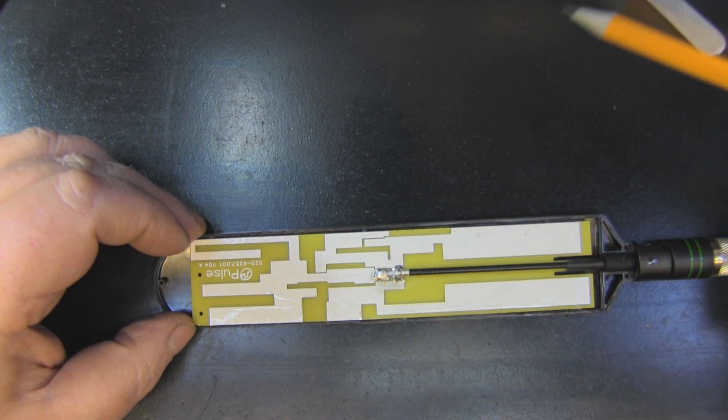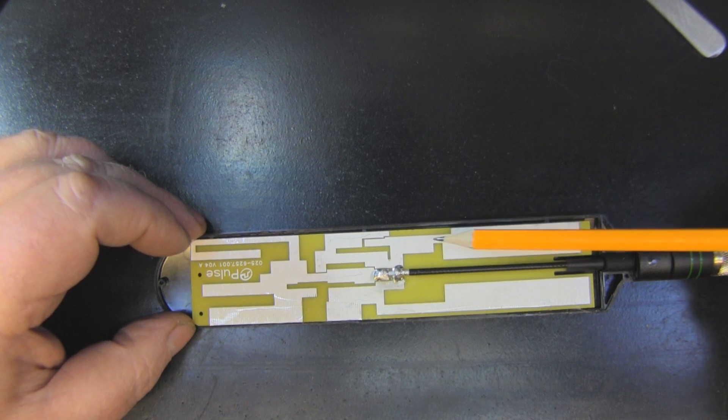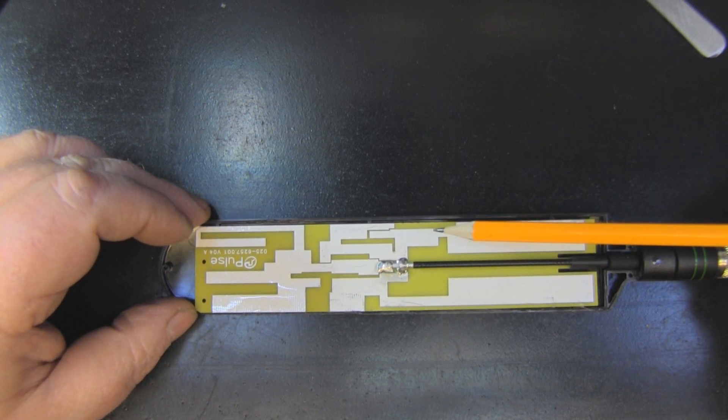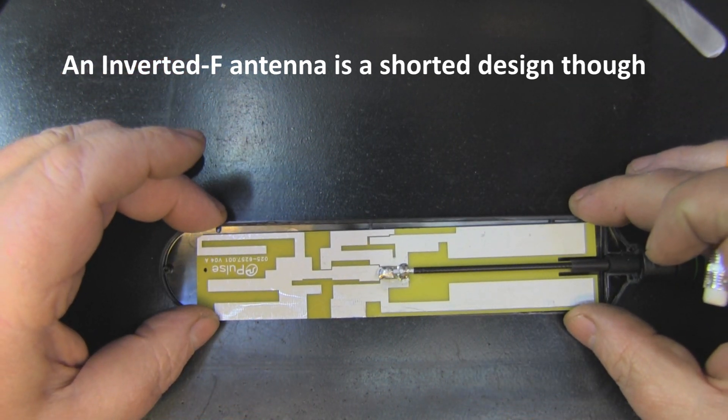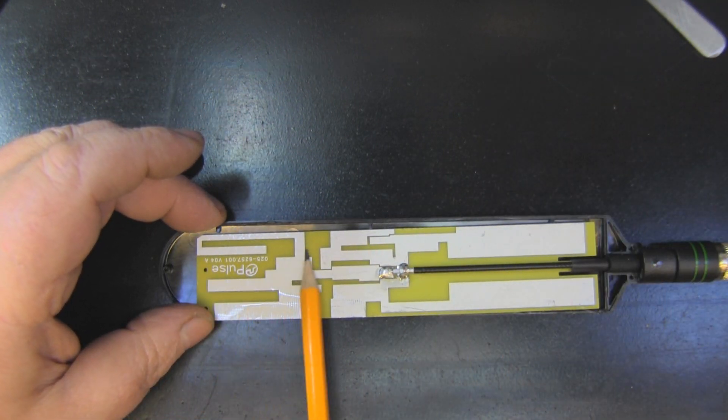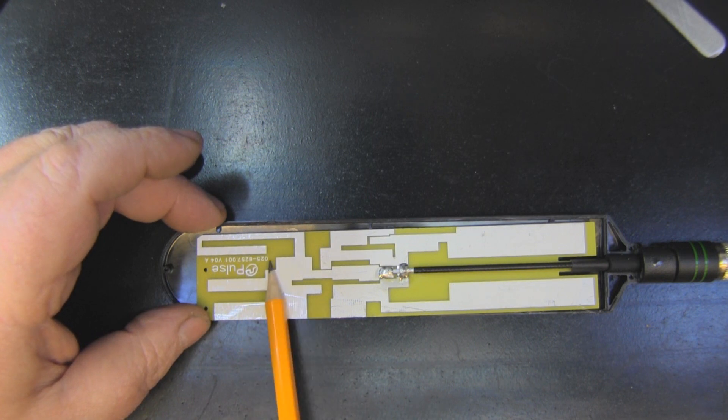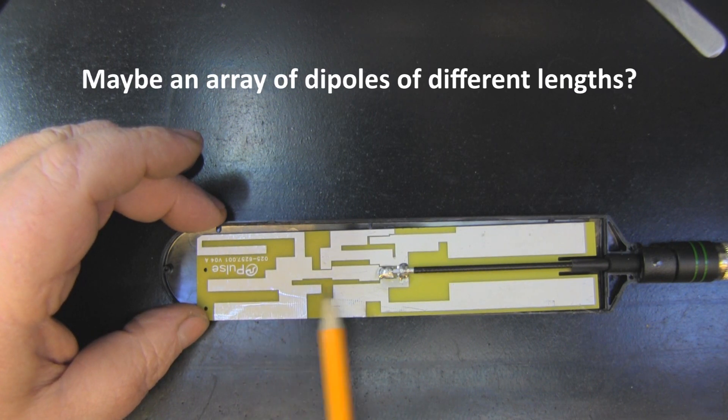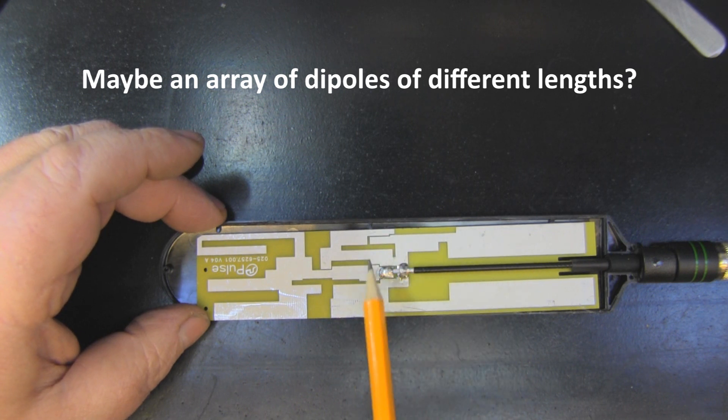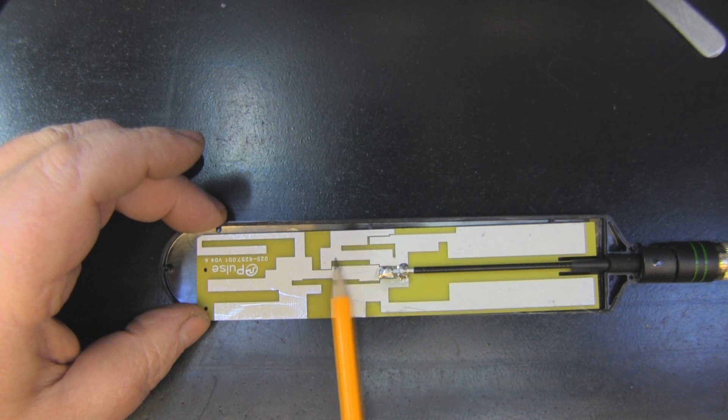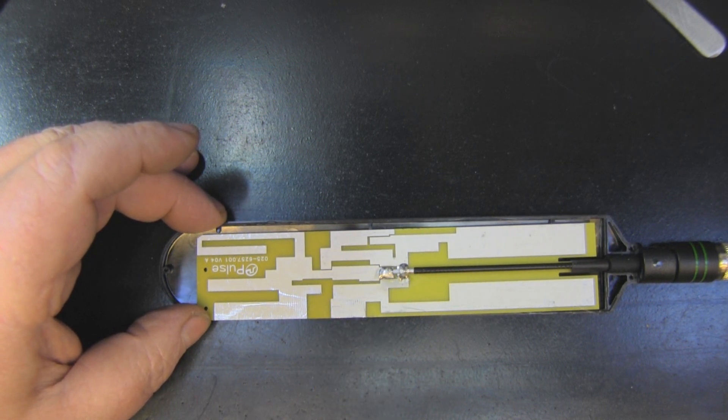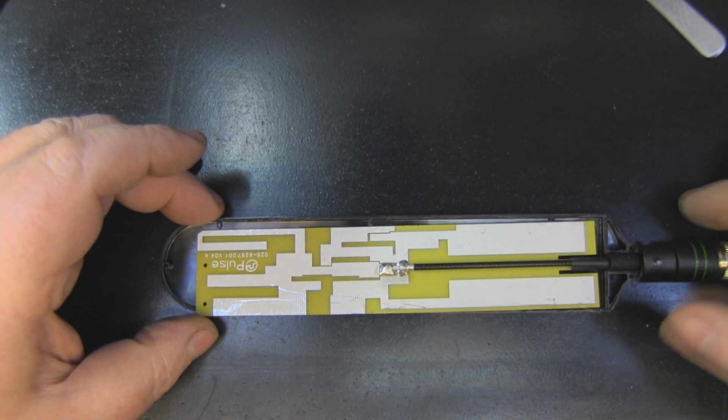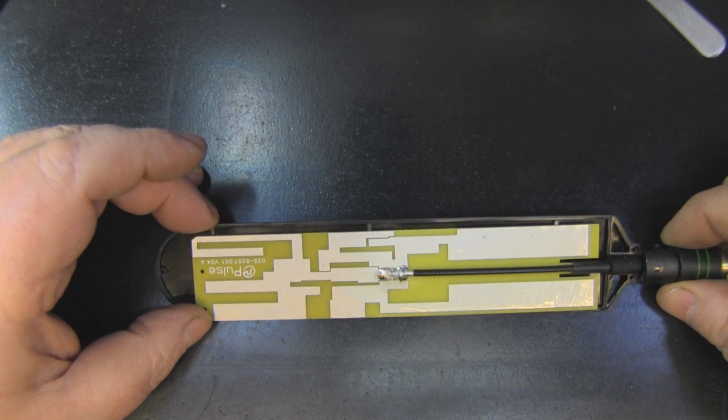It certainly has a feel of a dipole arrangement with the ground plane up here and the main driven element up here. But to me it looks like somebody's taken four inverted F-type antennas and just bunched them all together to cover all those frequencies. This certainly looks like an inverted F-type antenna element here, so does this down here, and also on the ground planes as well. That's definitely reminiscent of an inverted F-type antenna.